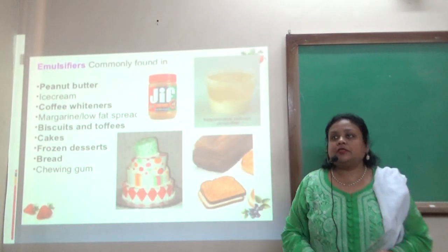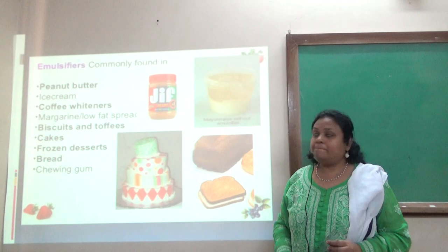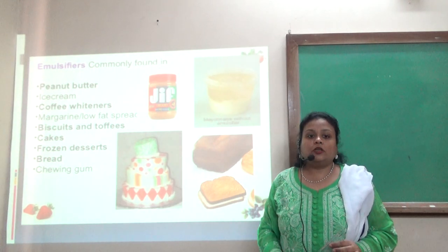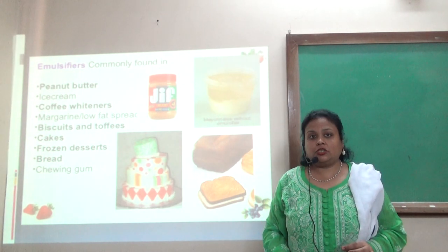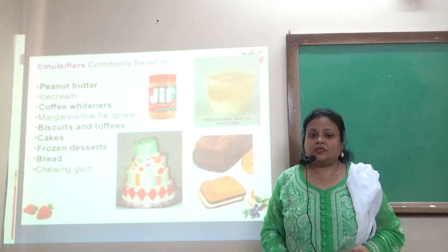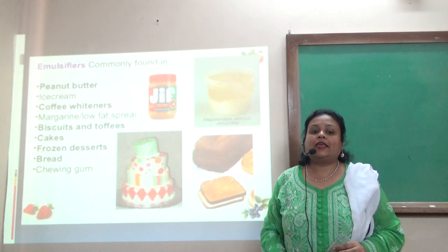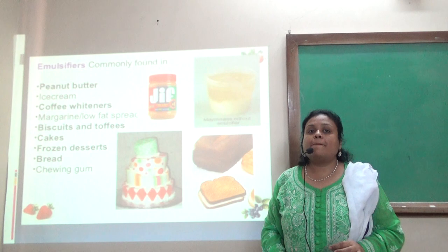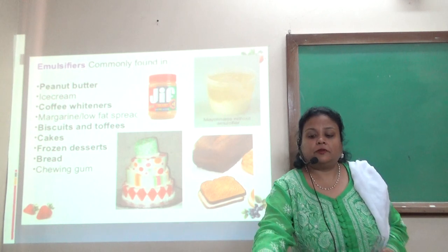Emulsifiers are commonly found in peanut butter, ice cream, coffee whiteners, margarine or low fat spreads, biscuits, toffees, cakes, frozen desserts, bread, as well as chewing gums.